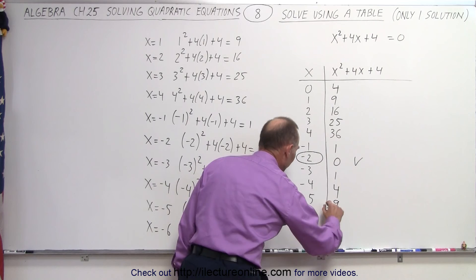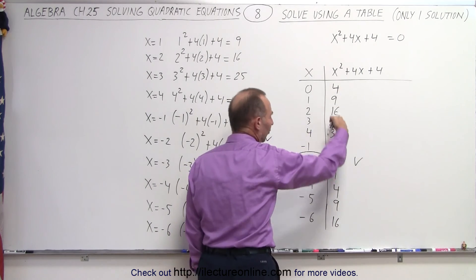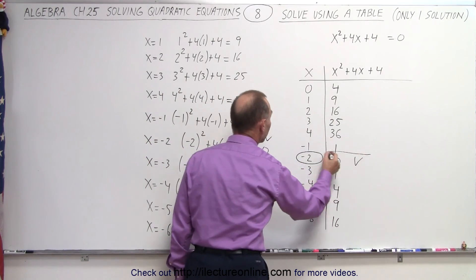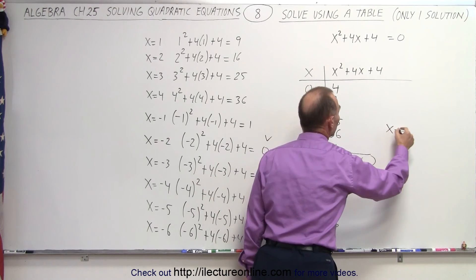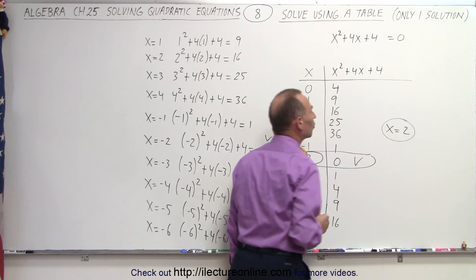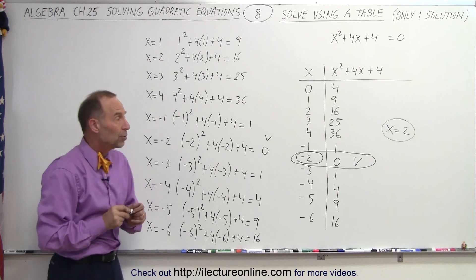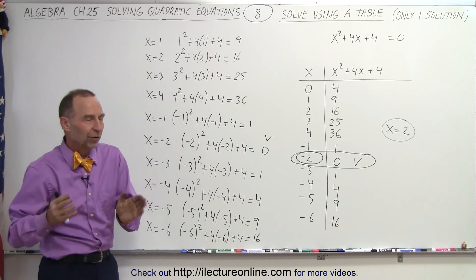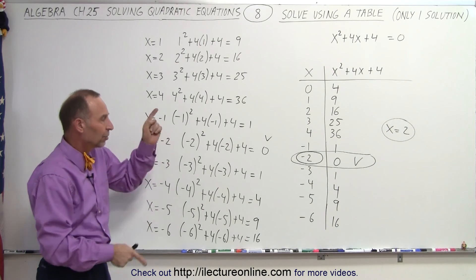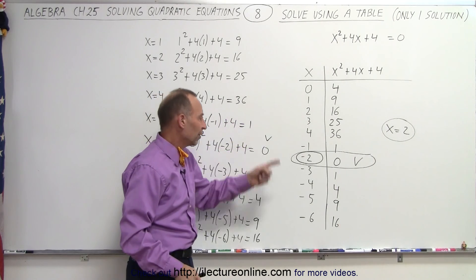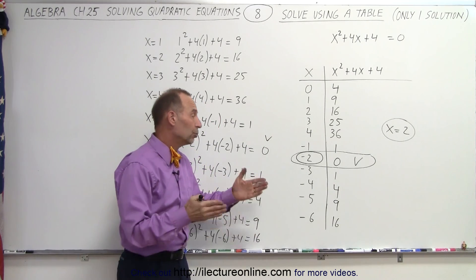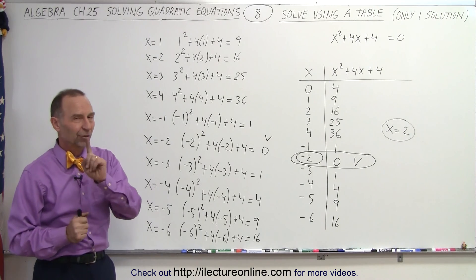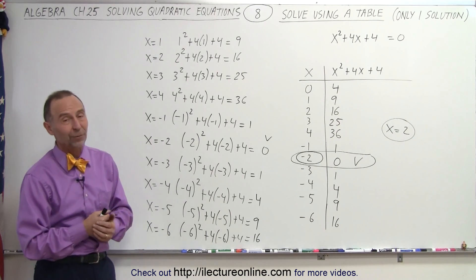So at negative 6 we get 16, and just like before the numbers are getting bigger and we're moving away from zero, which means there's only one solution: x equals negative 2. There's no other solution to this quadratic equation. Going in either direction — large positive numbers or increasingly negative numbers — we do not get closer to zero. And that's how we use the table of values to determine there's only one solution in this case.